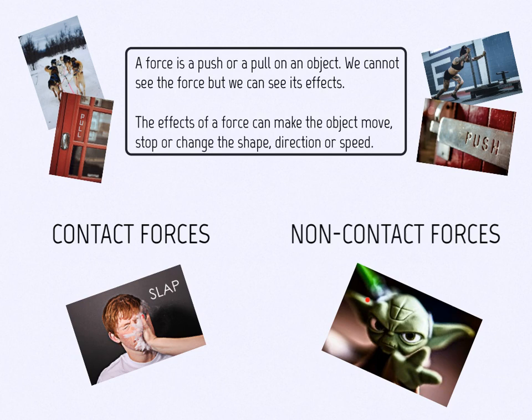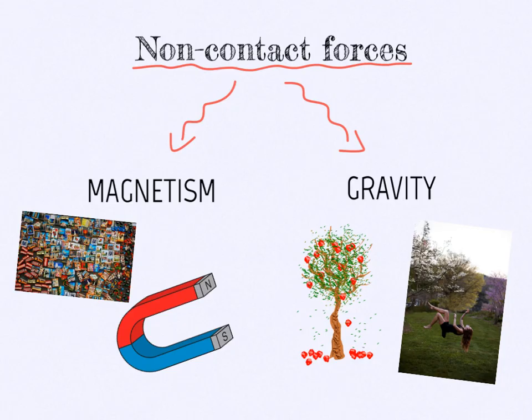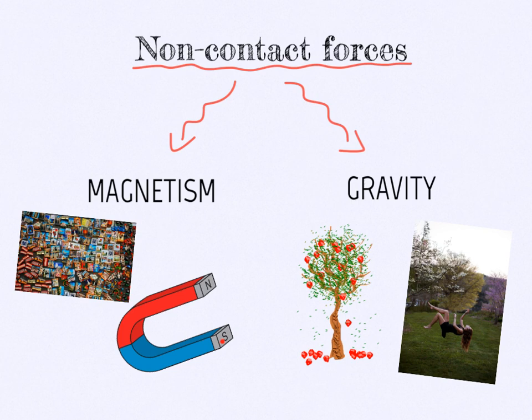We have gravity and magnetism as non-contact forces. In the non-contact forces we have magnetism and gravity. Magnetism has to do with magnets that have a north pole and a south pole. And gravity is the force that attracts objects to each other.